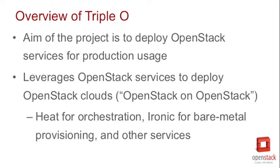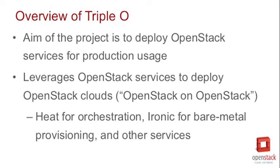Can you please give us a brief description of what is Triple O from a project perspective? Triple O is a deployment project and the aim of the project is to deploy OpenStack services for production uses. It's different to a lot of deployment tool chains in that we actually use OpenStack services to deploy OpenStack where possible, and that's where the name comes from — it's Triple O, OpenStack on OpenStack.